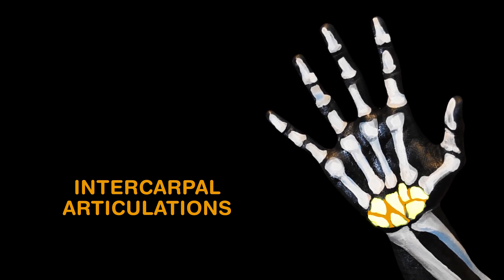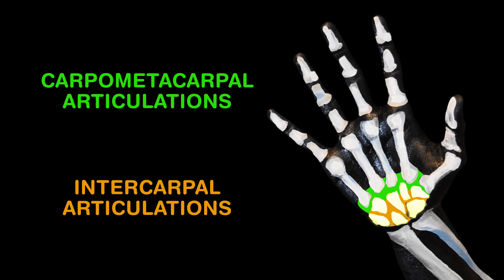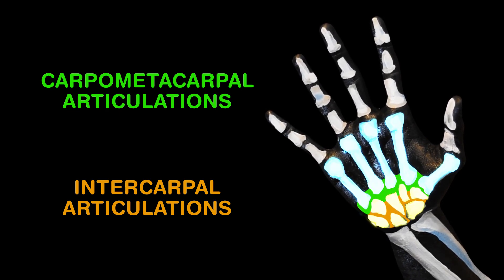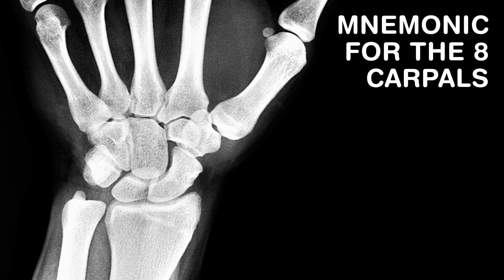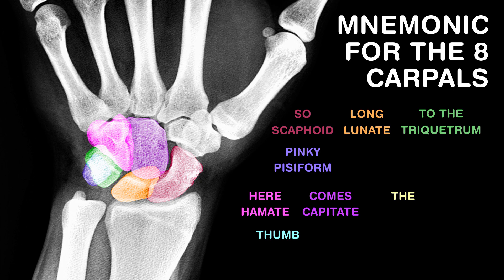The intercarpal articulations, as a matter of fact, are the joints where your carpals come into contact. Carpometacarpal articulations go all the way around, where carpals touch metacarpals — these joints can be found. Now here's a trick to remember, just use this rhyme, going from pinky to thumb: scaphoid, lunate, triquetrum, pisiform, hamate, capitate, trapezoid, trapezium.